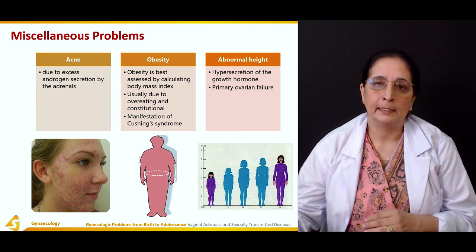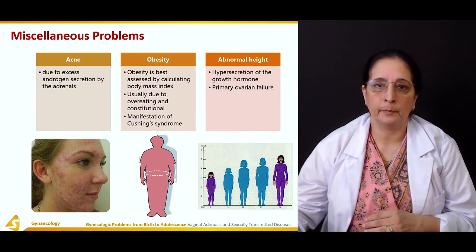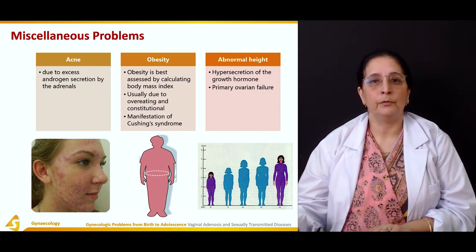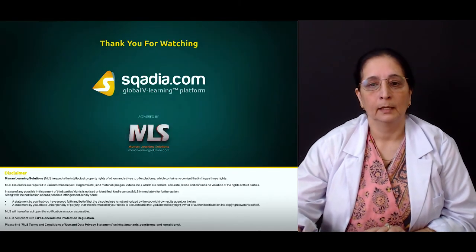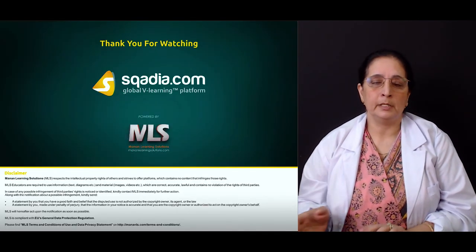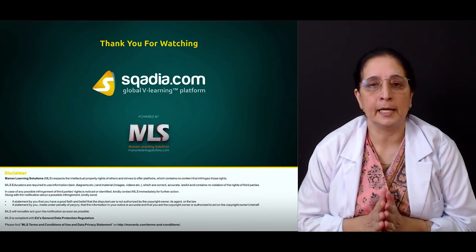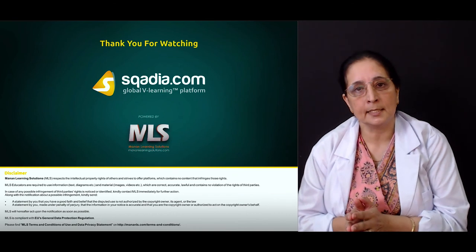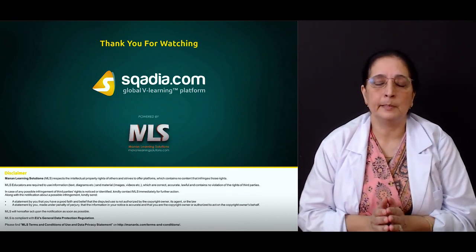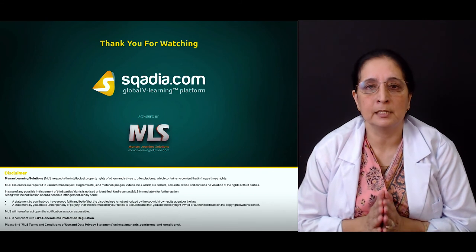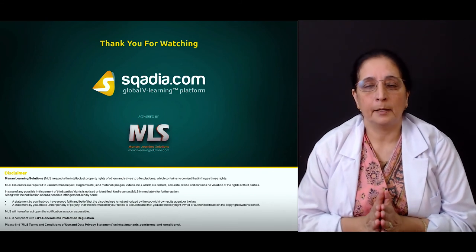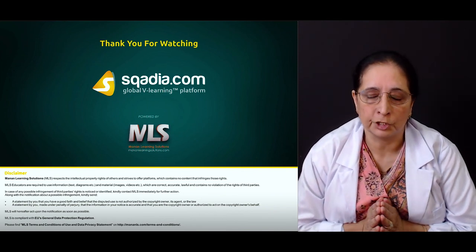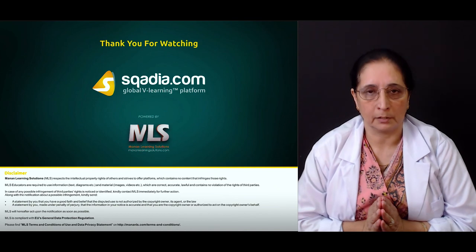Excessive height in females — being taller than normal — may also be due to primary ovarian failure. That was all about the different disorders affecting the age of infants to adolescence, covering problems that affect infants, toddlers, pre-menarchal, peri-menarchal, and adolescent age. Thank you for watching scardia.com.